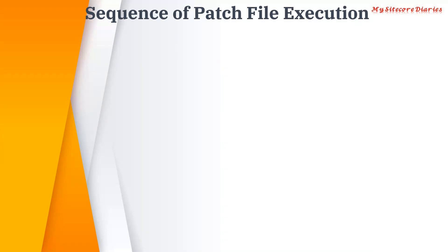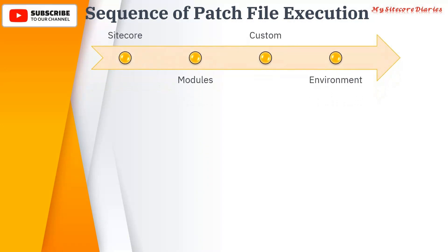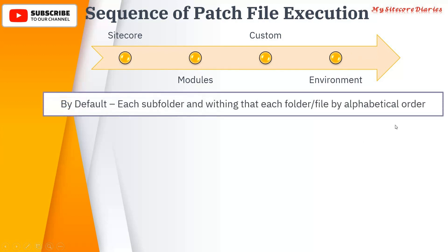The sequence of patch file execution is: first the Sitecore layer, then Modules, then Custom, then Environment. Within each layer, files are executed in alphabetical order, including subfolders. Environment is last, so any environment-specific configuration will override everything else.